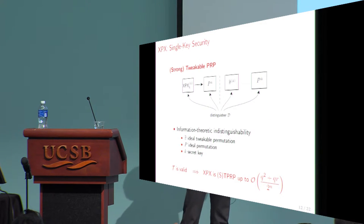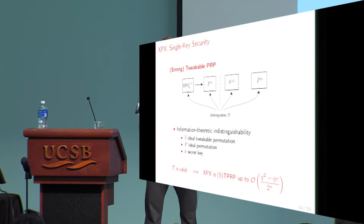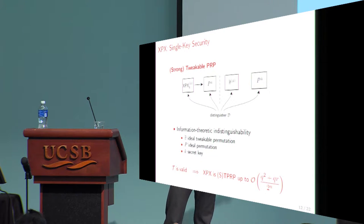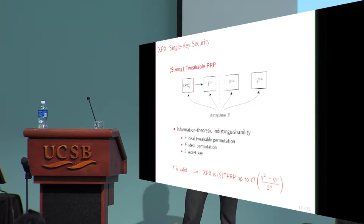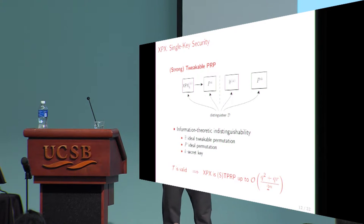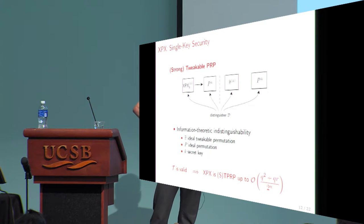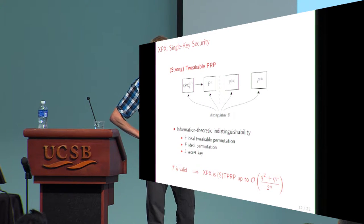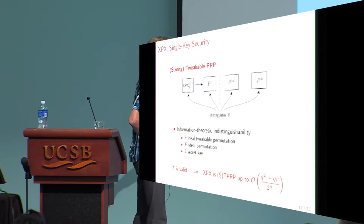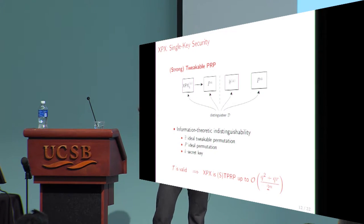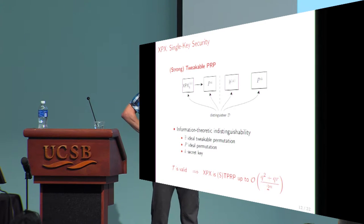The security is proven in the random permutation security model. The attacker is given access to either the construction XPX or a random equivalent, and also access to the underlying primitive P, which is assumed to be an ideal permutation. Complexity is counted by the number of queries: Q construction queries and R primitive queries. We prove that if the tweak set is valid, we get birthday bound security, where the advantage is bounded in terms of Q and R.